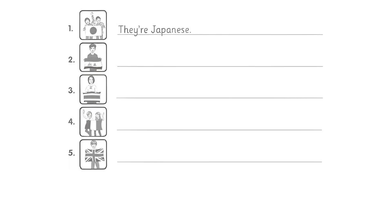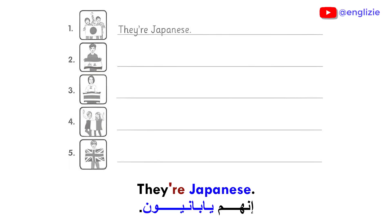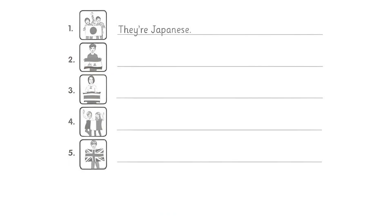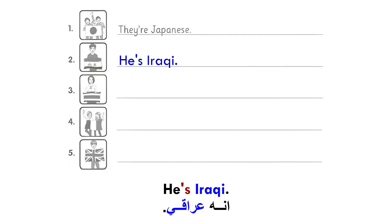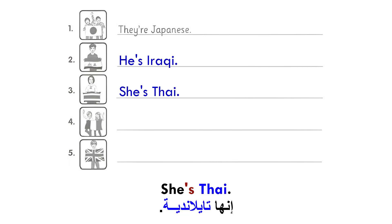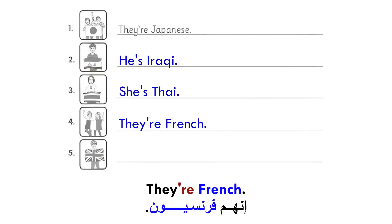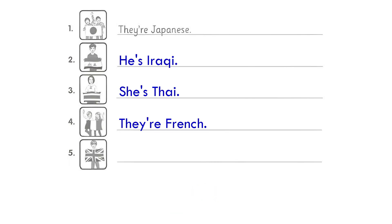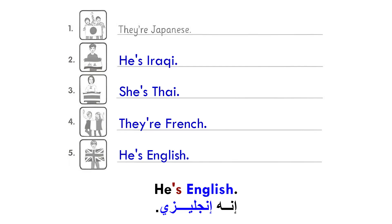1. They're Japanese. إنهم يابانيون. 2. He's Iraqi. إنه عراقي. 3. She's Thai. إنها تايلاندية. 4. They are French. إنهم فرنسيون. 5. He's English. إنه إنجليزي.